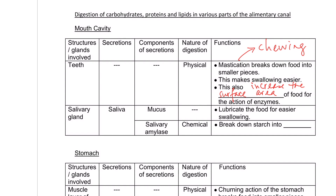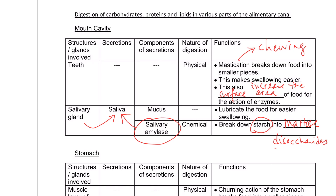There is one type of digestive enzyme found in the mouth cavity known as salivary amylase. It is part of the saliva secreted from the salivary gland. This enzyme can help break down starch in food into maltose, which is a kind of disaccharide. Remember, disaccharides are still too large to be absorbed by the human body.